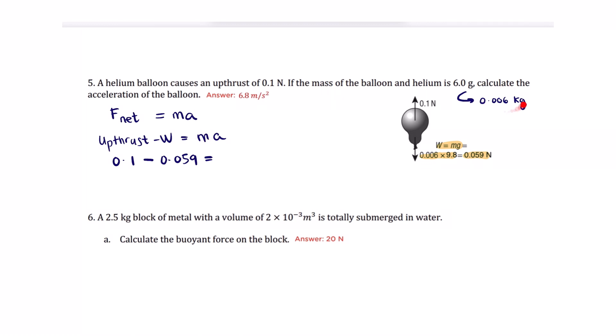And once again, the mass should be in kilograms. So if it's 6 grams, we need to divide it by 1,000. So the mass is going to be 0.006 kilograms times the acceleration, which is what's being asked in this problem. Putting these values in your calculator, you'll get the acceleration is equal to 6.8 meters per second squared.